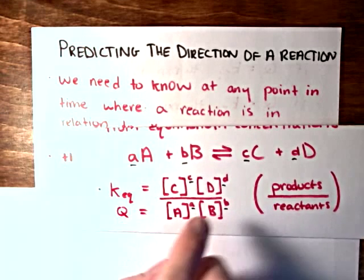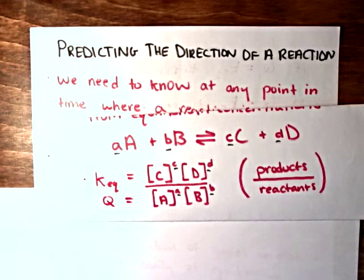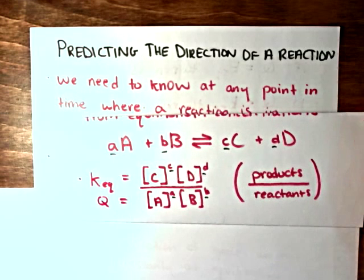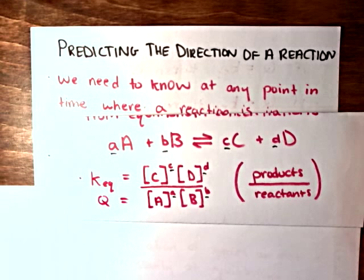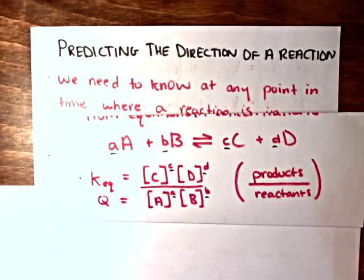Well, the reaction quotient is written in the exact same way. The only difference between the equilibrium constant and the reaction quotient is that for an equilibrium constant, we input concentration values when the reaction was at equilibrium. So the concentrations of the reactants and the products were at equilibrium.